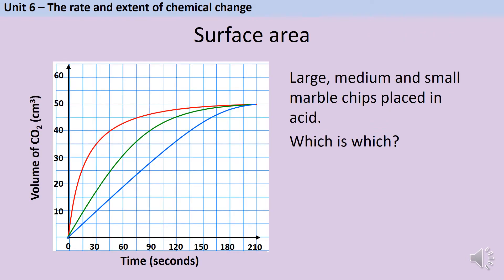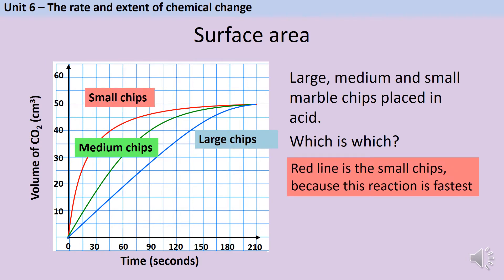Exam papers often include questions that ask you to interpret a graph in order to answer a question about rates of reaction. In this experiment the same mass of large, medium and small marble chips have been placed in some acid so that they release carbon dioxide. Which line represents which reaction? The red line is the small chips. I can tell because the reaction is fastest. And I know that the reaction is fastest because if I look at the graphs the steepest line is the fastest reaction. If I took a particular time point, like 60 seconds, I can see that within those 60 seconds the small chips have released maybe 42 cm³ of gas, whereas the medium chips have only released around 30 cm³, and the blue chips, the largest chips, haven't even released 20 cm³.